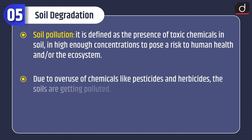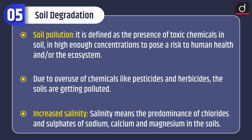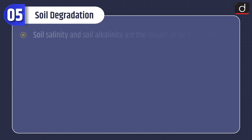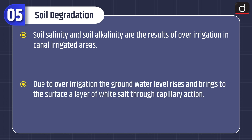Soil pollution is defined as the presence of toxic chemicals in soil in high enough concentrations to pose a risk to human health and/or the ecosystem. Due to overuse of chemicals like pesticides and herbicides, soils are getting polluted. Increased salinity means the predominance of chlorides and sulfates of sodium, calcium and magnesium in the soils. Soil salinity and soil alkalinity are results of over-irrigation in canal-irrigated areas; the groundwater level rises and brings a layer of white salt to the surface through capillary action.